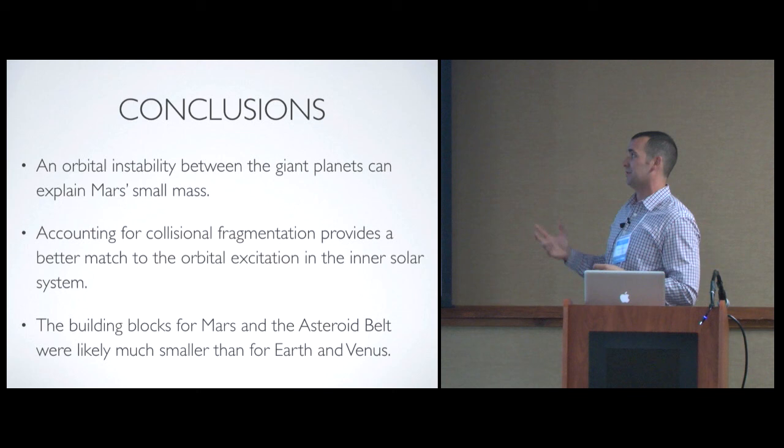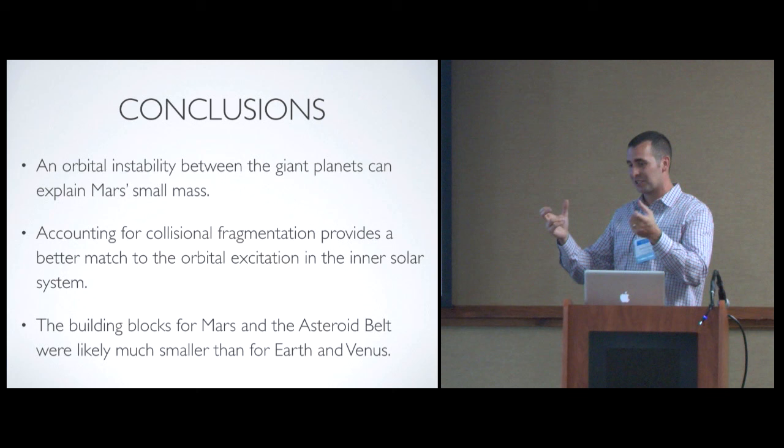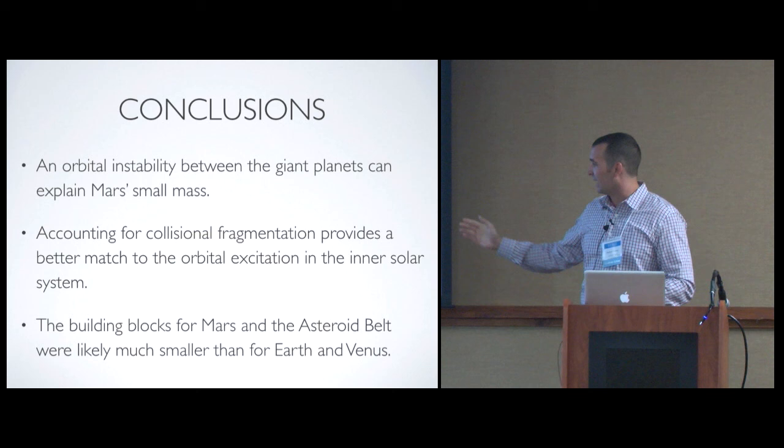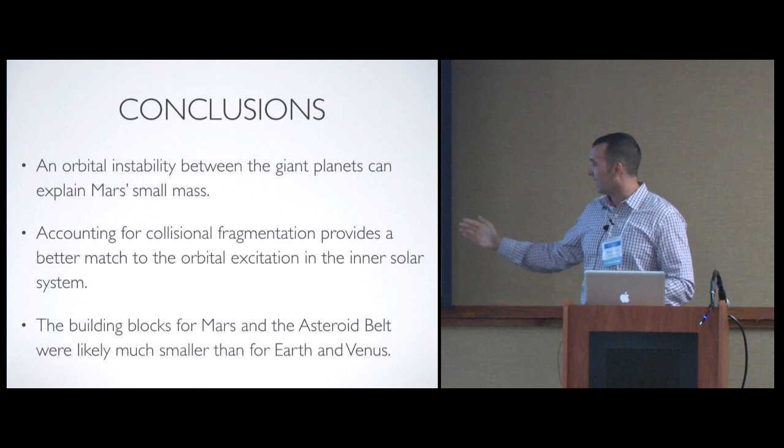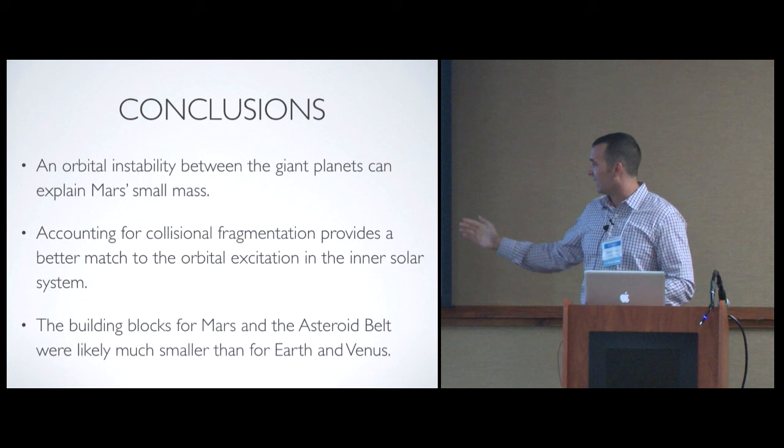So in conclusion, we argue that this orbital instability between the giant planets is a natural explanation for Mars' small mass. If our models take into account collisional fragmentation, we can explain the dynamically cold orbits in the inner solar system. And this problem with Mars and the asteroid belt might have to do with the fact that our initial conditions we're using are somewhat fictitious.